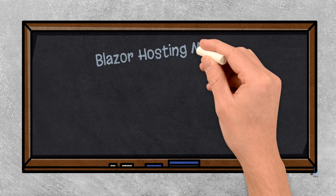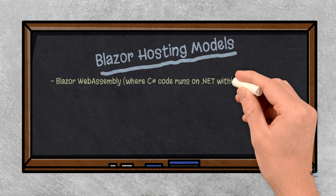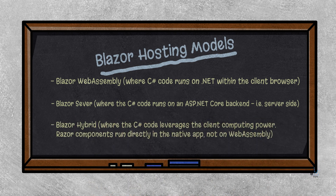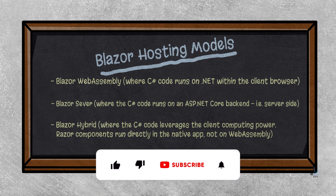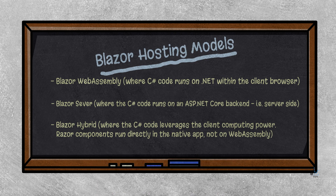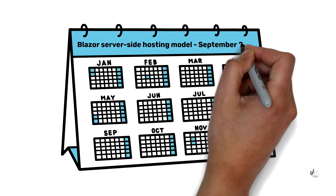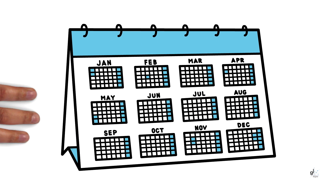Blazor hosting models. Blazor currently has three hosting models: Blazor WebAssembly, where C# code runs on .NET within the client browser; Blazor Server, where the C# code runs on an ASP.NET Core backend — i.e., server-side; and Blazor Hybrid, where the C# code leverages the client computing power. With this hosting model, Razor components run directly in the native app, not on WebAssembly. Microsoft launched the Blazor server-side hosting model in September 2019 and the WebAssembly model in May 2020.